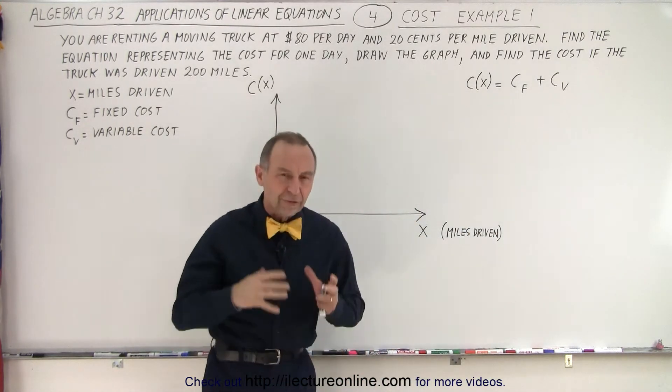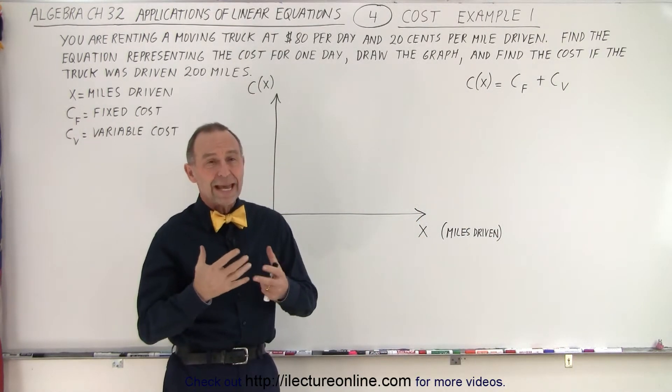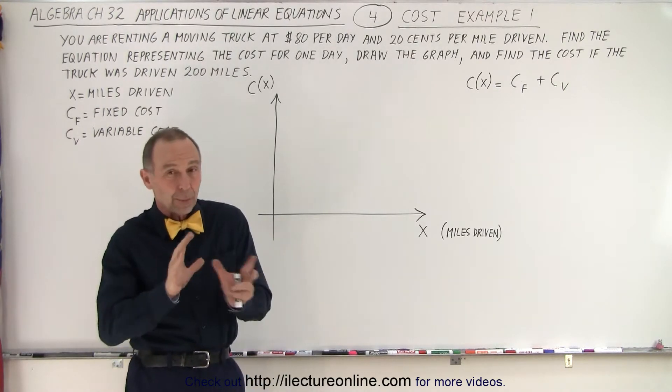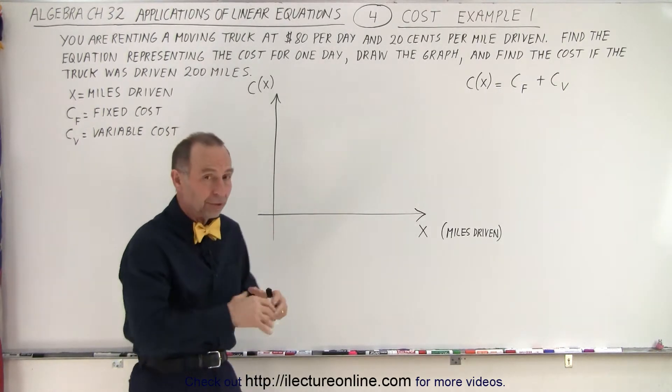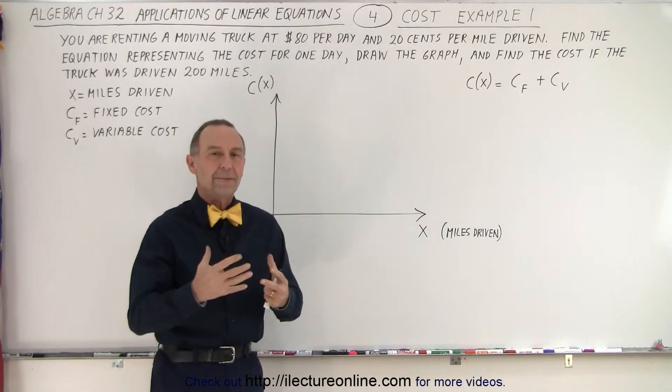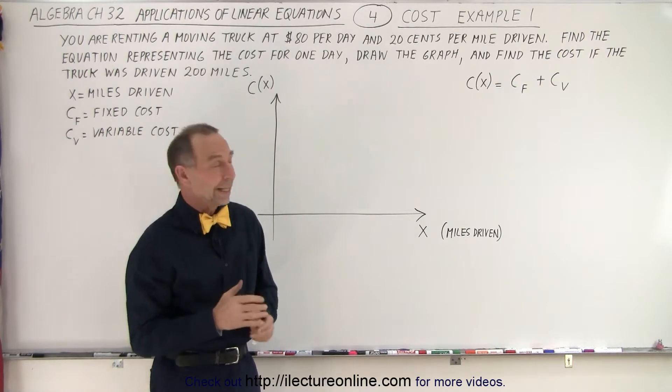There's what we call fixed cost and variable cost. What's the difference? Well, the fixed cost is the cost you have to pay every single day, or every single month, or every single year, depending upon what the time frame is. In this example, the time frame is a single day. So it's the cost you have to pay per day, regardless of what you do.